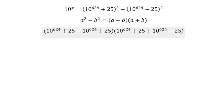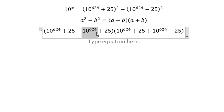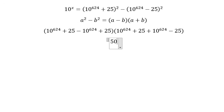This one cancels this one, you get 50. This one cancels this one, so now you have 2 multiply with 10^624. 50 multiply with 2, you will get 100.